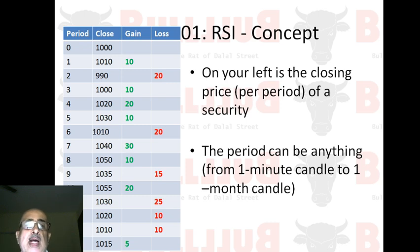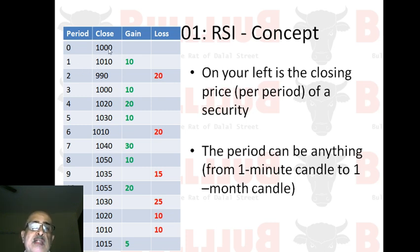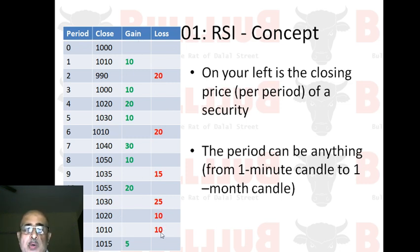Now I'm going to explain the concept of RSI. At period zero, before RSI is calculated, the stock is at 1,000. Then we have 14 trading periods where RSI is calculated. On the first period it goes to 1,010 — a gain of 10. The next period it falls to 990 — a loss of 20. Then it moves to 1,000 again — a gain of 10. And so on. I've plotted all the gains and losses here.